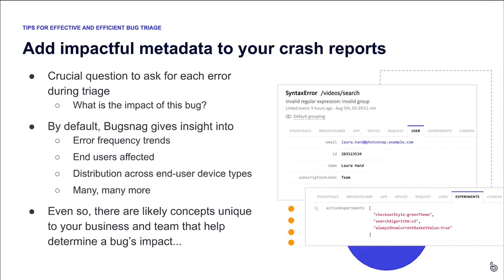When you're triaging a bug, a crucial question to be asking is: what is the impact of this bug? By default, BugSnag gives you insight into several dimensions of a bug's impact that can help you make that determination. But even with all this out-of-the-box functionality, there are likely concepts unique to your business domain or the way your team builds and delivers software that you could add to your BugSnag crash reports to give you more upfront information about each bug's impact.